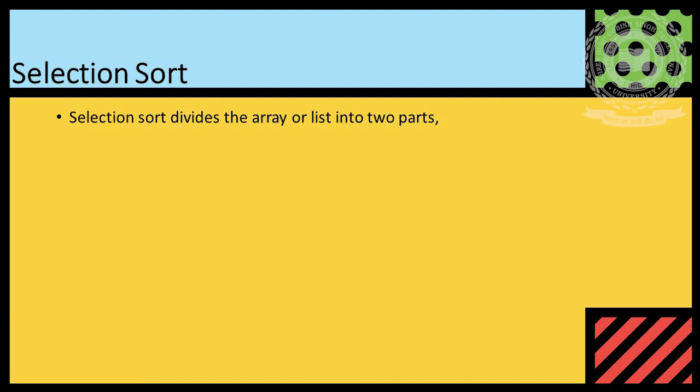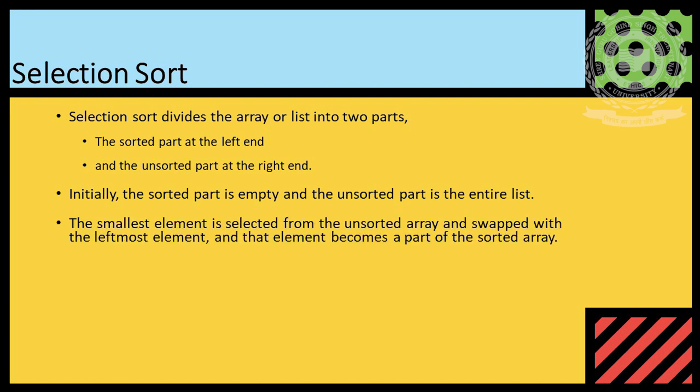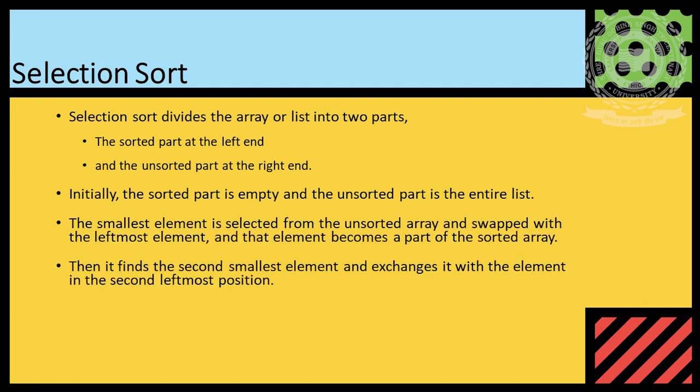Divide array into two parts, sorted and unsorted part. We find minimum element from unsorted part and keep on adding in sorted part. And iteratively, array is sorted.